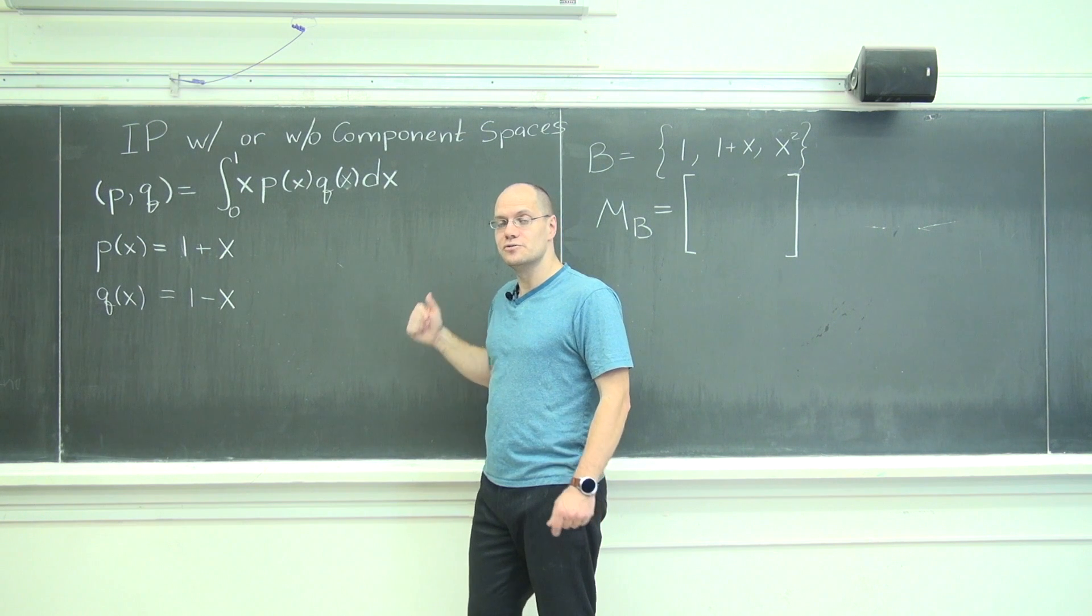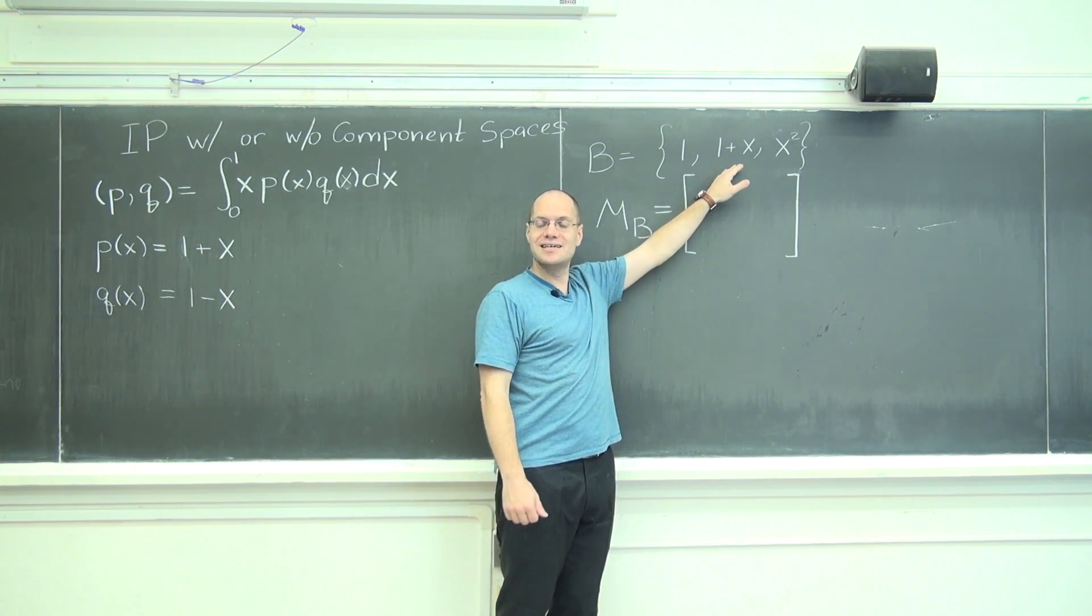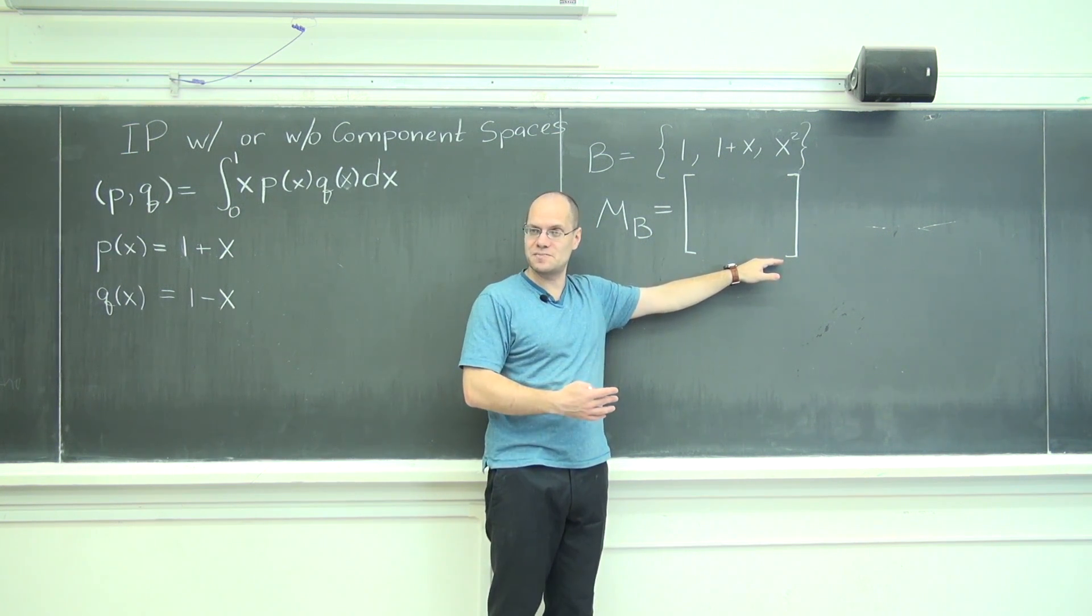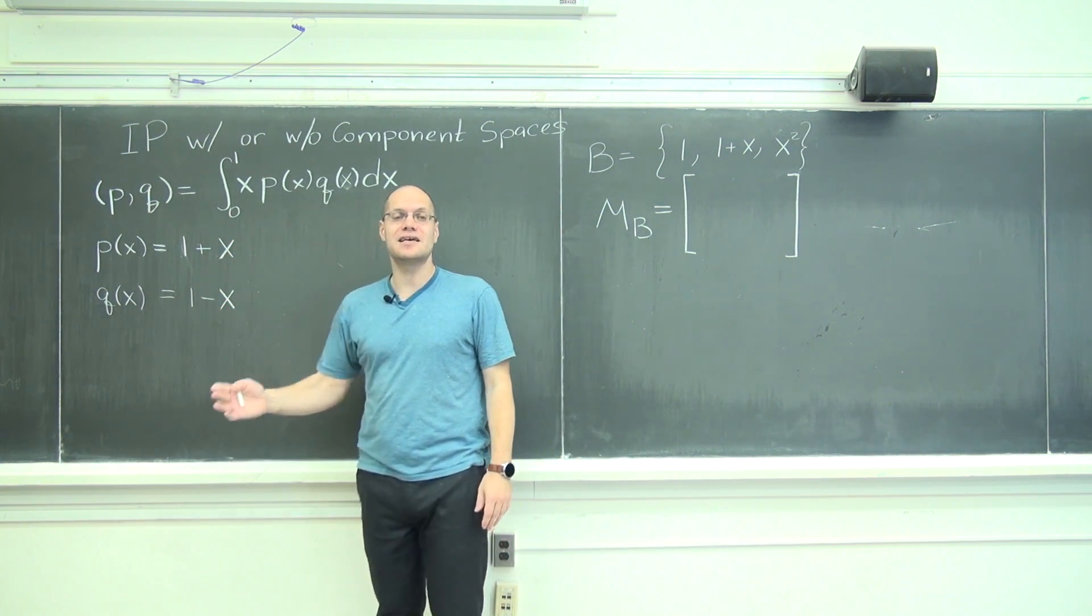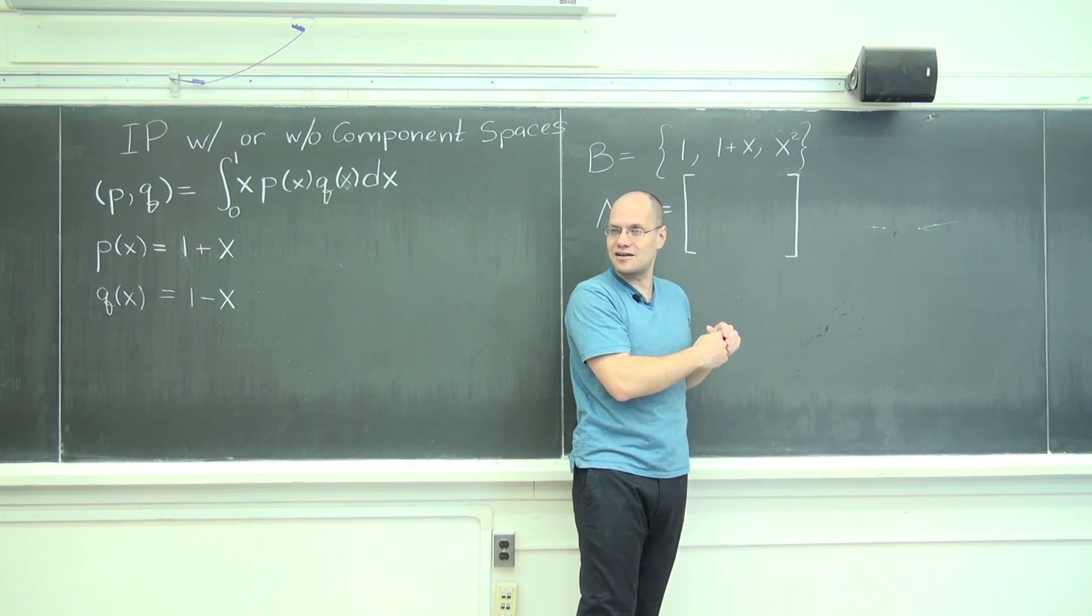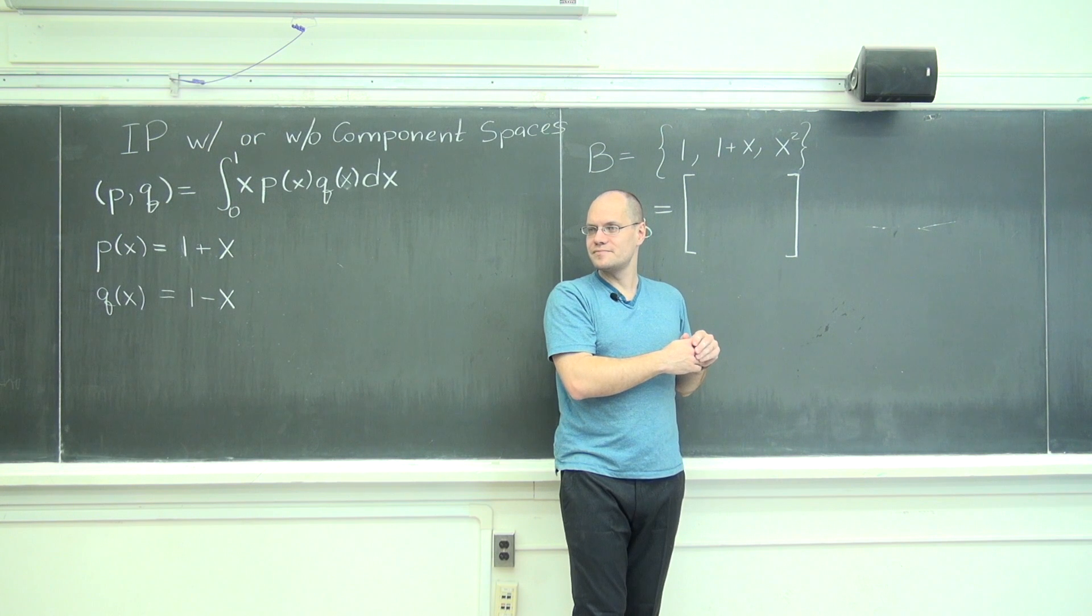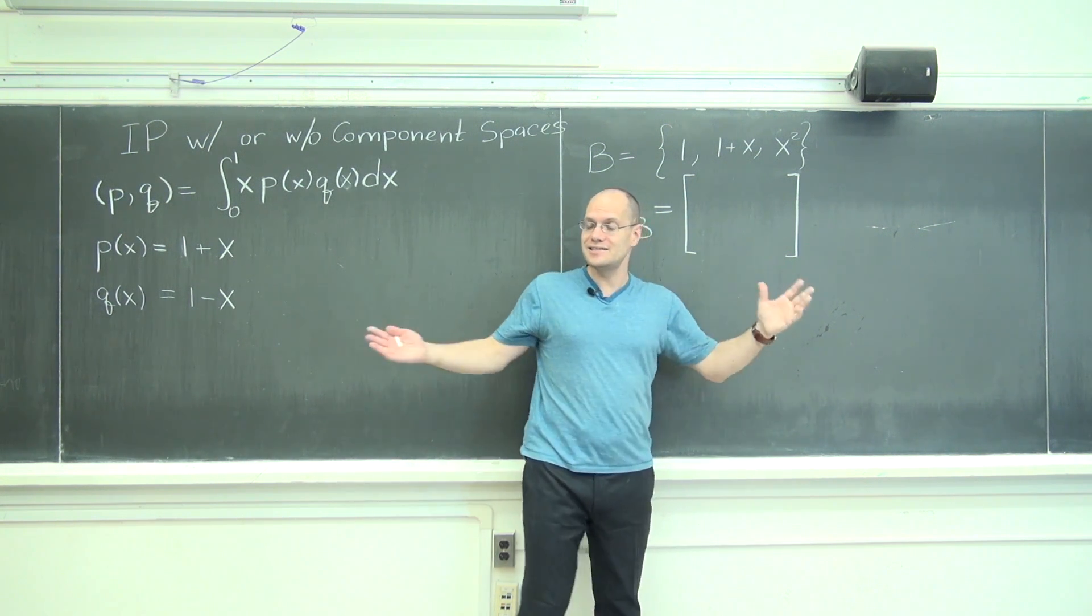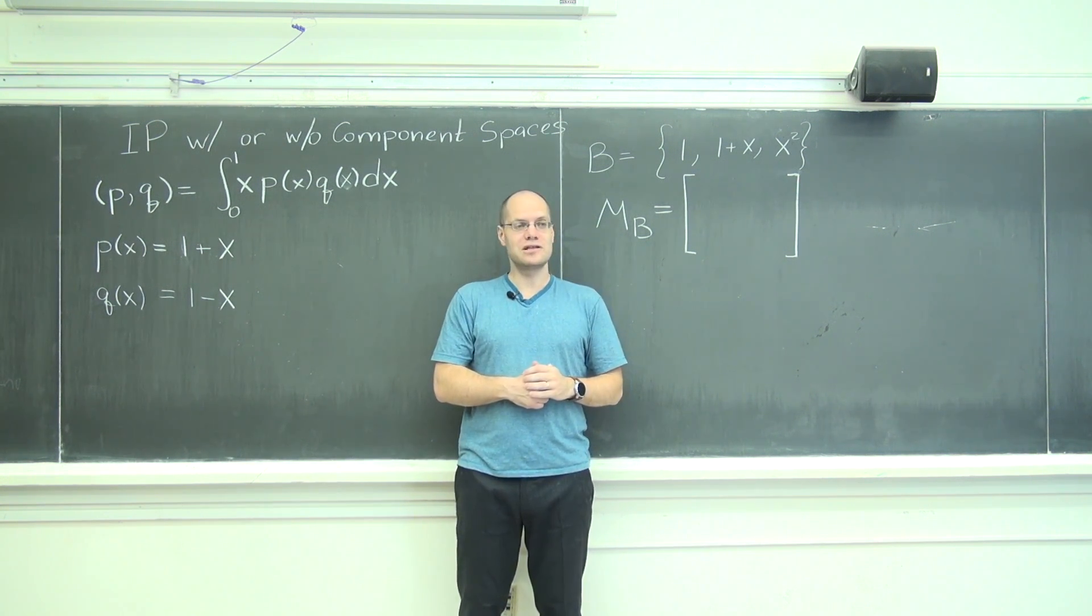And then what we're going to do, we will choose this basis and we'll represent the inner product by the inner product matrix that captures this inner product in the component space. We will then translate each one of these vectors into their components. And by calculating the appropriate matrix product, we should come up with the same number. Just to show you that A, this works, and to highlight the difference between the two worlds. Okay. Is the goal clear?